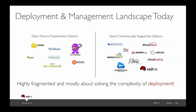Most of the deployment tools are all about solving the complexity part in terms of deployment. On the left you'll see some open source tools — Foreman, which is what Red Hat uses today for deployment, PackStack, Cobbler, or if you have enough skills in-house you can roll your own solution. Or you can go with something commercially supported on the right-hand side: Cloud Scaling, Piston, all the guys you can get a distro from. The takeaway is that this is a very fragmented landscape, and the main focus of all these tools is just about deployment. Once you stand up a cloud, what's next?